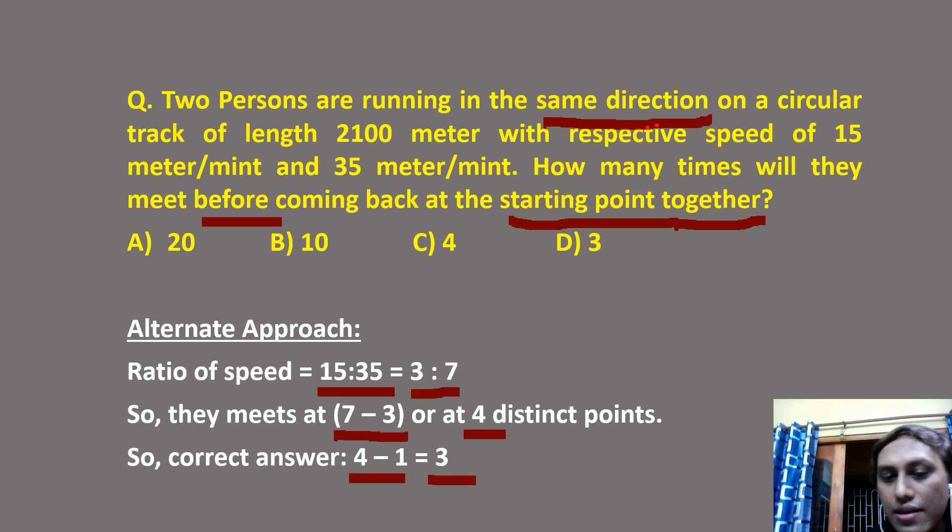That is, they must meet at 3 different points before coming to the starting point. Remember, they meet at 4 different points, but leaving the starting point, they meet at 3 places or 3 points. So correct answer must be Option D.